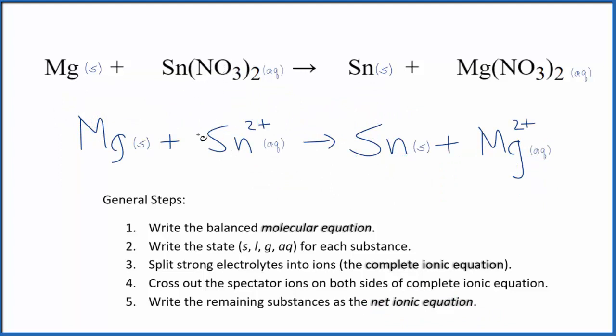You'll note that charge is conserved. Here in the reactants, we have a 2+, but in the products, we have a 2+. So charge is the same on both sides. And if you count the atoms up, they're balanced too.